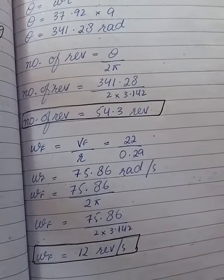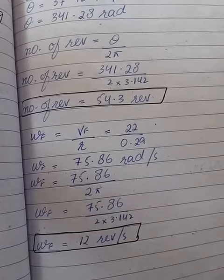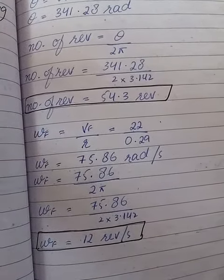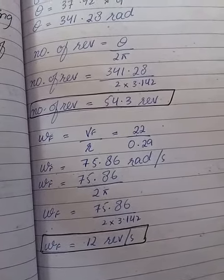Omega f equals vf divided by r. That's 22 divided by 0.29, which equals 75.86 radian per second. If we divide by 2 pi, we get 12 revolutions per second.